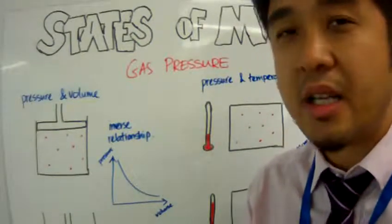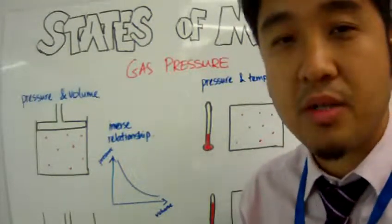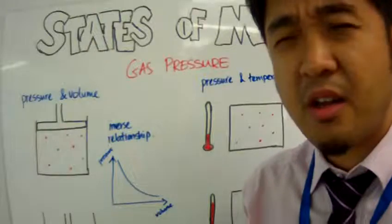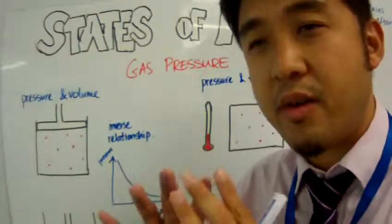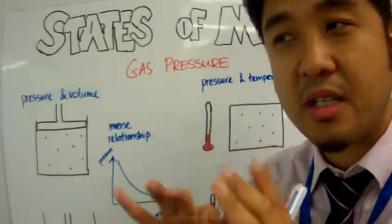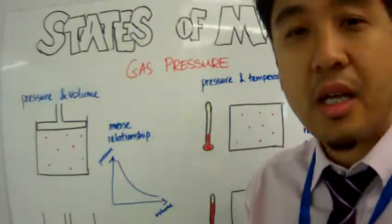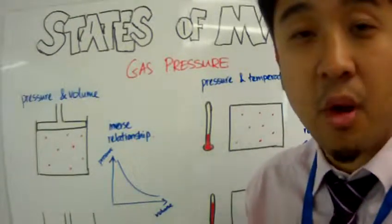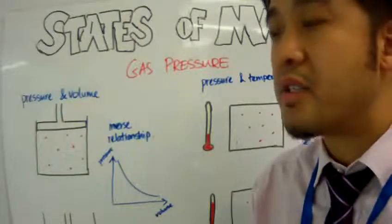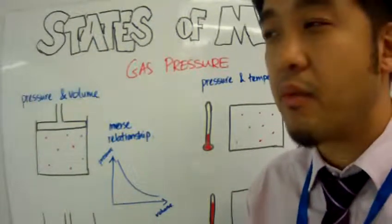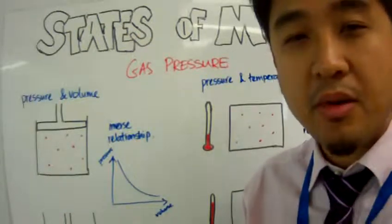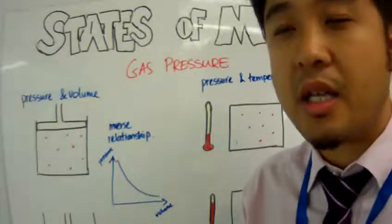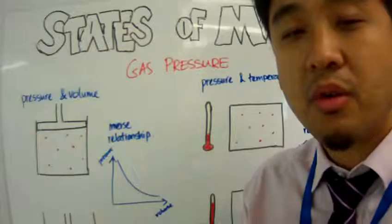Kinetic theory basically explains the behavior of these particles, or these round spheres, in their solid, liquid, and gaseous states. We can already talk about how particles behave in the solid and liquid states, but it is quite interesting when we try to explain the behavior of these particles in the gas or gaseous state. It is hard to deviate away from talking about gas pressure, Brownian motion, and diffusion when we talk about particle behavior in the gaseous state using kinetic theory. So that's what we're going to do.